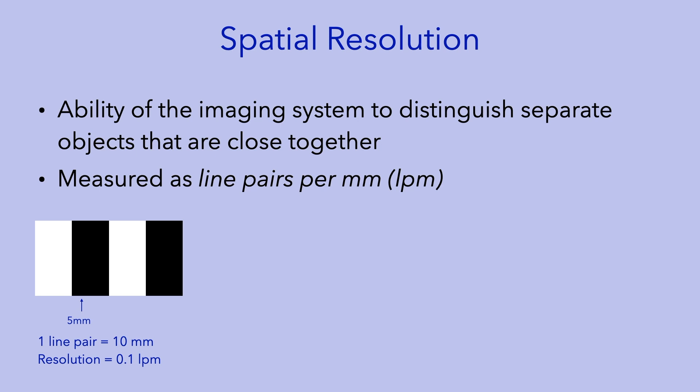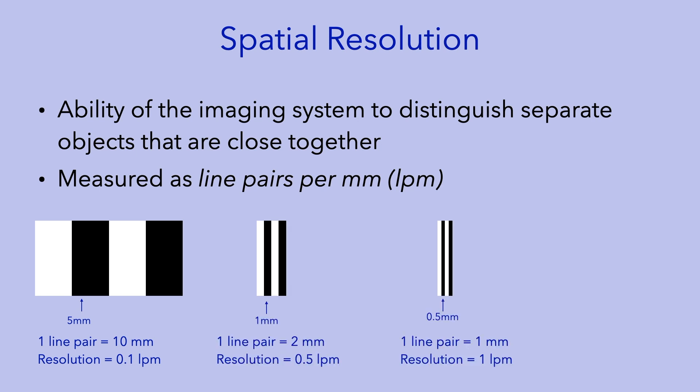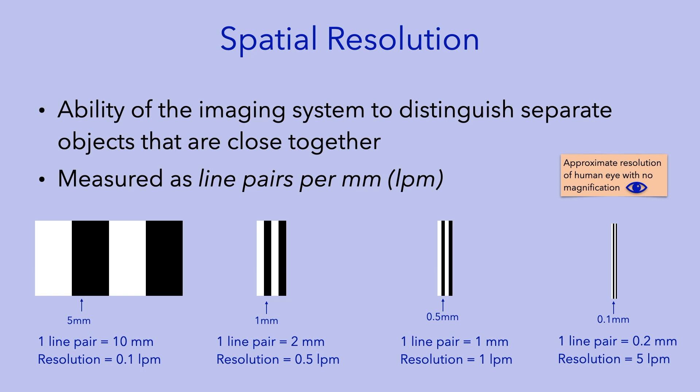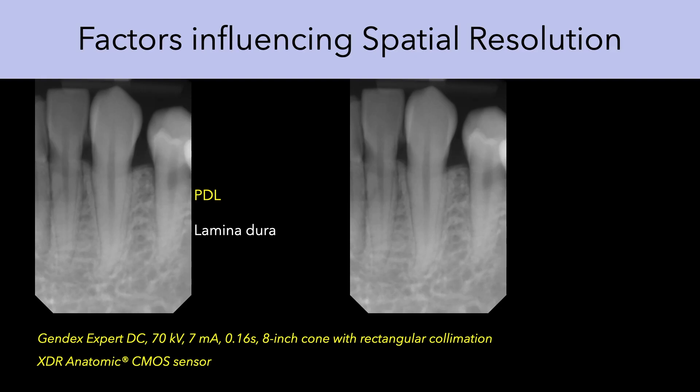Spatial resolution is measured in line pairs per millimeter. In this example, you have alternating radiolucent and radiopaque lines. The width of each line is 5 millimeters, so 10 millimeters would encompass one radiolucent and one radiopaque line. This yields a spatial resolution of 0.1 line pairs per millimeter. Note that as the lines get thinner and are spaced more closely, you will need a higher spatial resolution in order to discern them as individual lines.